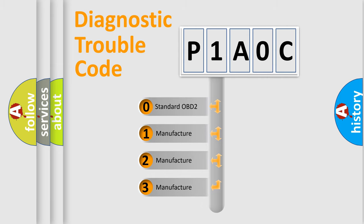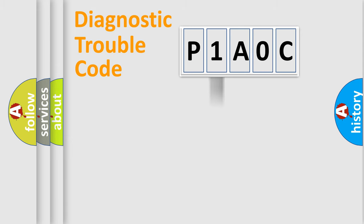If the second character is expressed as zero, it is a standardized error. In the case of numbers 1, 2, 3, it is a more prestigious expression of the car-specific error.